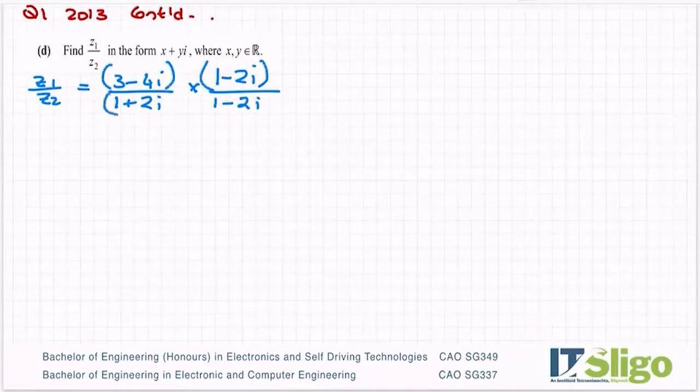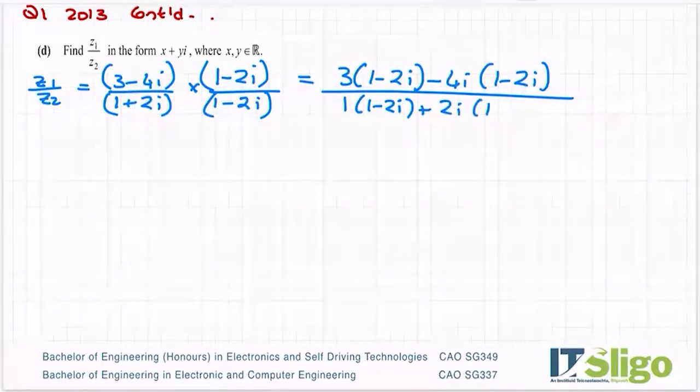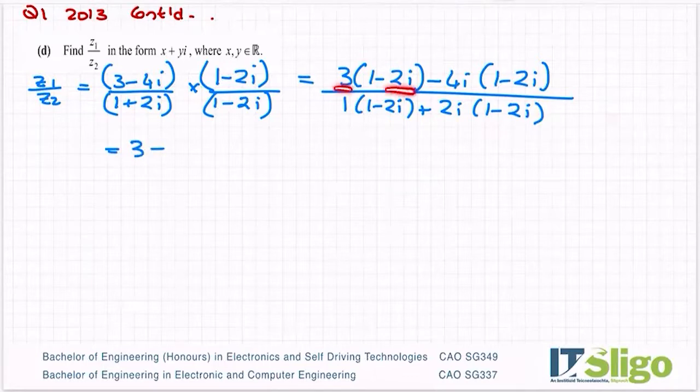So let's multiply. So on the top, I'll have 3 by everything in the second bracket, and I'll go back from a minus 4i by everything in the second bracket. And then on the bottom, I have 1 by everything in the second bracket, and go back from a plus 2i by everything in the second bracket. Let's multiply. 3 times 1 is 3. 3 by minus 2i is minus 6i. And minus 4i by 1 is minus 4i. And now minus by minus is a plus. So I'm doing my signs first. Did you see that? Next, I look at my numbers. 4 times 2 is 8. And then i by i is i squared. So sign, number, letter is how I do it when it gets complicated.